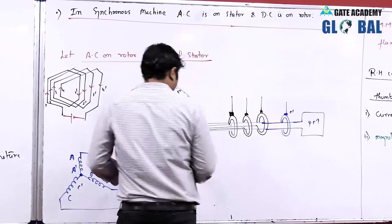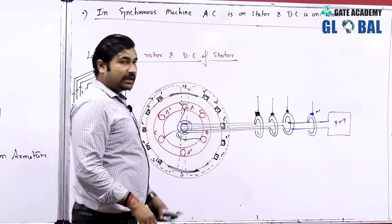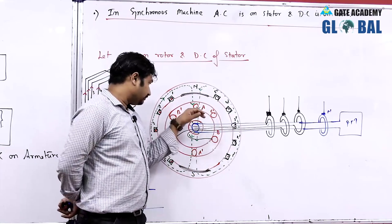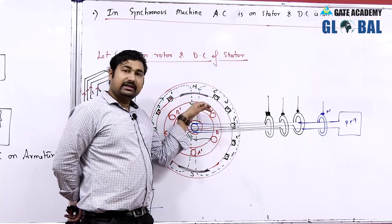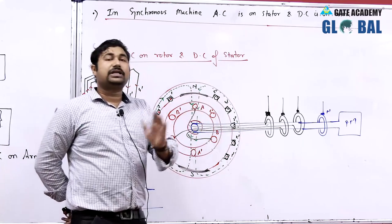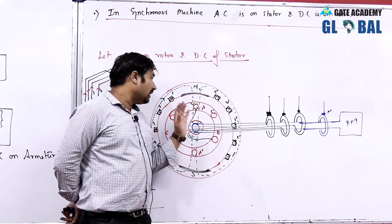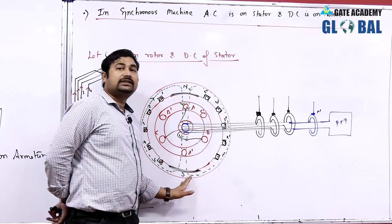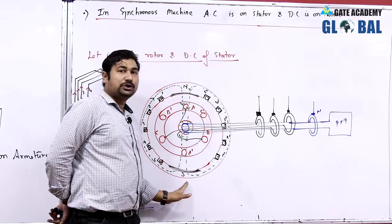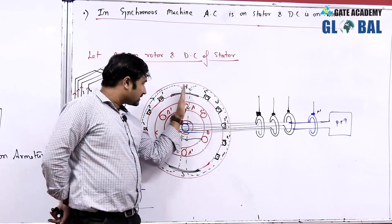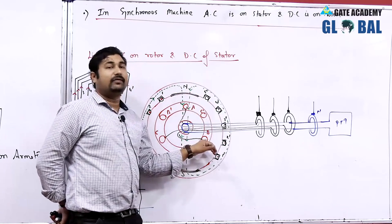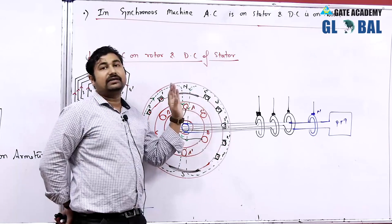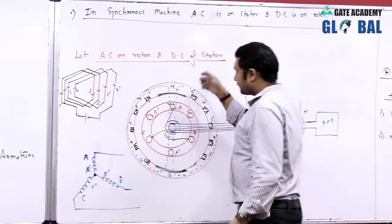When we rotate the rotor by the prime mover, the winding starts rotating in the presence of the field. Whenever there is relative motion between a conductor and a magnetic field, there will be an induced EMF on the conductor. If we rotate in this fashion, A and A-dash are first in the influence of north and south. After 60 degrees of rotation, B and B-dash come under influence, then C and C-dash, then A and A-dash again. Thereby, induced EMFs are produced in the three phases.